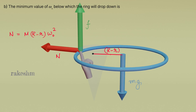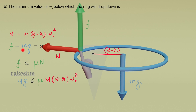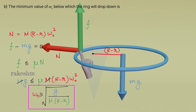In the horizontal direction, the center of mass is rotating in a circle of radius capital R minus small r, so we can write N = M(R − r)ω₀². In the vertical direction, F − Mg = 0. Next, F must be less than or equal to mu N, which is the limiting friction. Writing F as Mg, we get Mg ≤ μ · M(R − r)ω₀². Taking μ(R − r) to the denominator, we get ω₀ ≥ √[g / (μ(R − r))]. So the minimum value of omega naught is √[g / (μ(R − r))].